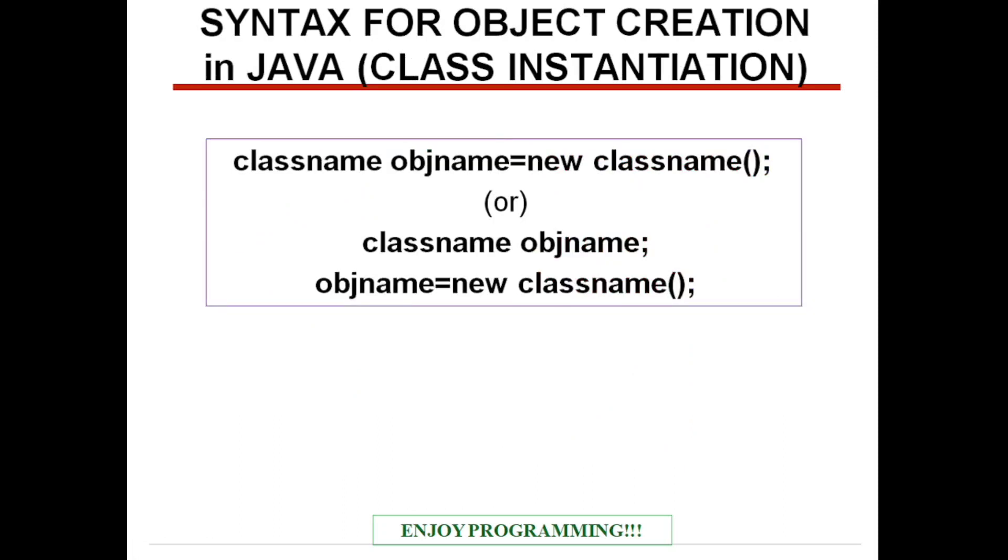Coming for syntax for object creation in Java. This is the syntax. In either ways, we can write. The first one is class name followed by object name is equal to new class name parenthesis semicolon. Where this class name is the name of the template we have created for this instances, object name, the instance what we are going to create. This is nothing but the identity of the object. And this is the user defined name. We can give any meaningful identifier. Is equal to new. New is the dynamic memory allocation operator in order to allocate memory to our objects. Class name parenthesis. This is nothing but constructor. Constructor is used to initialize the values of the object.